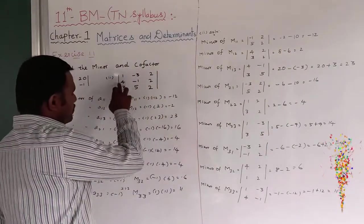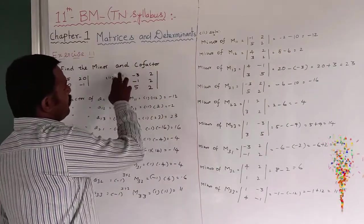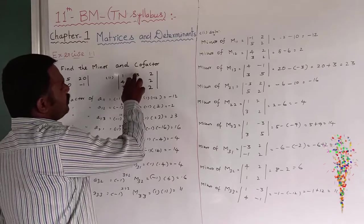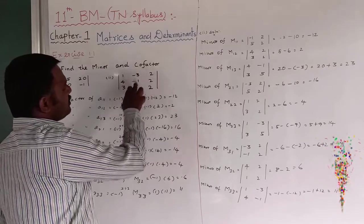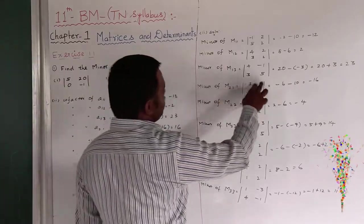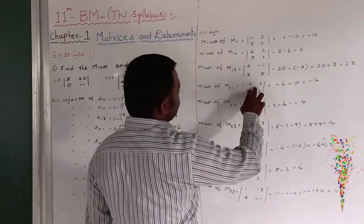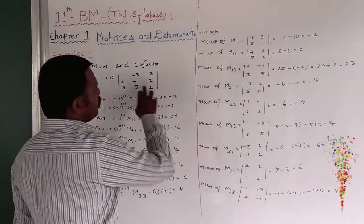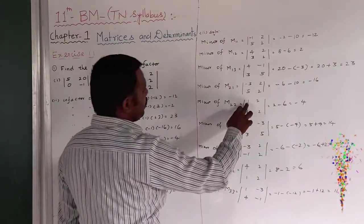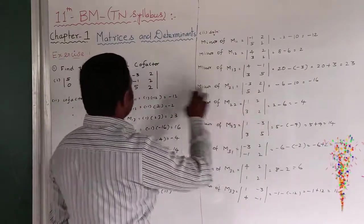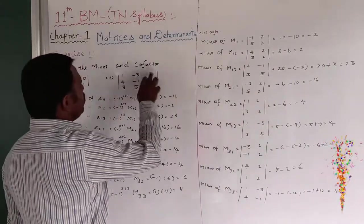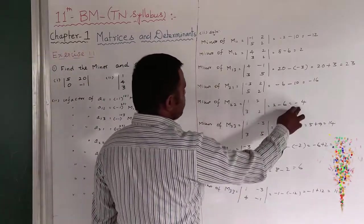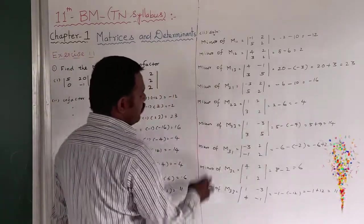M21 means remove that row and column, leaving minus 3, 2, 5, 2. So minus 6 minus 10 equals minus 16. M22 means remove second row second column, leaving 1, 2, 3, 2. So 2 minus 6 equals minus 4.